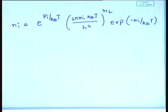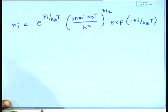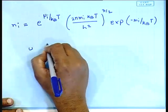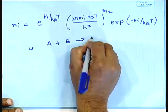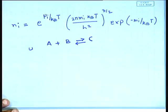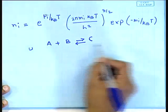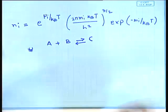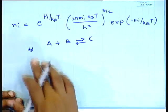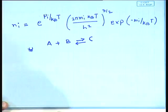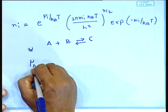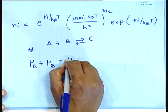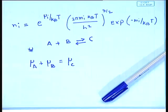In chemical equilibrium, for a reaction A + B → C (a reversible reaction — for instance, neutron and proton combining to give deuterium), it is known from statistical mechanics that the chemical potentials satisfy μ_A + μ_B = μ_C.